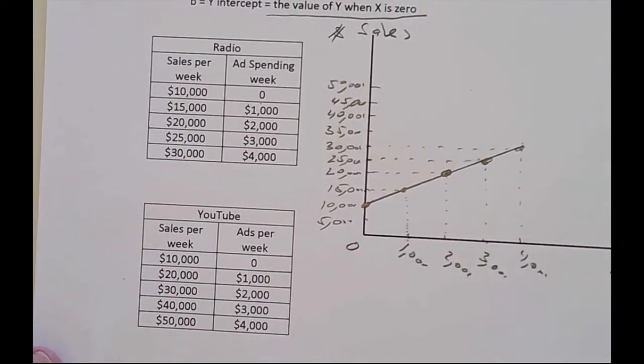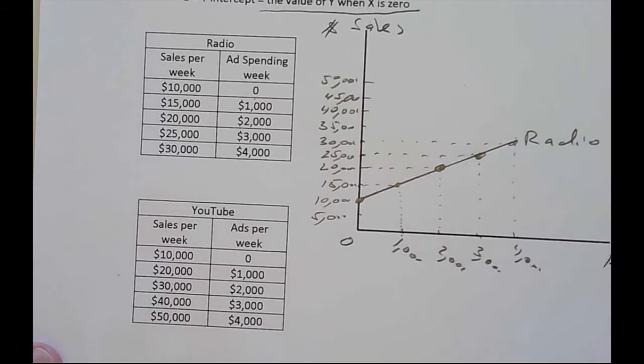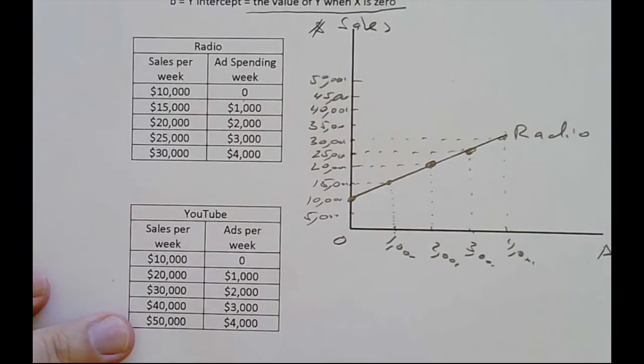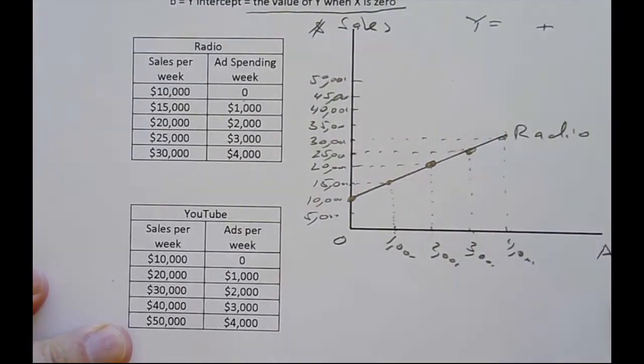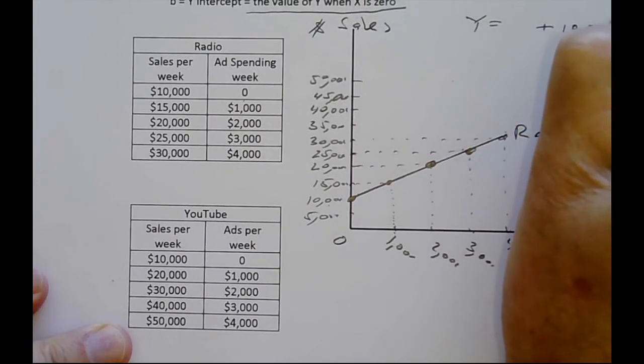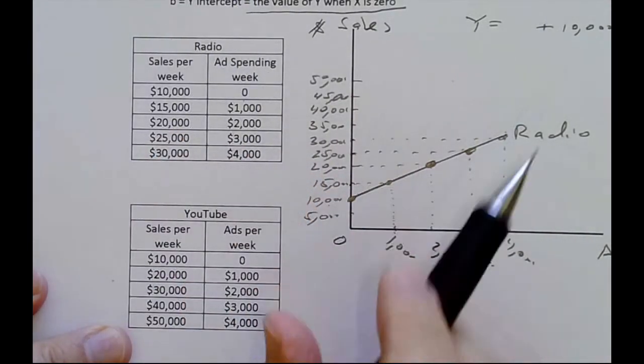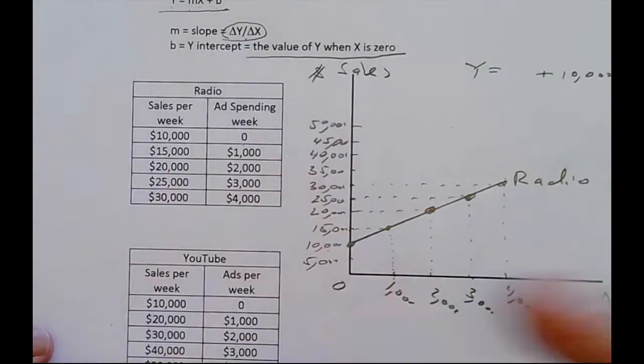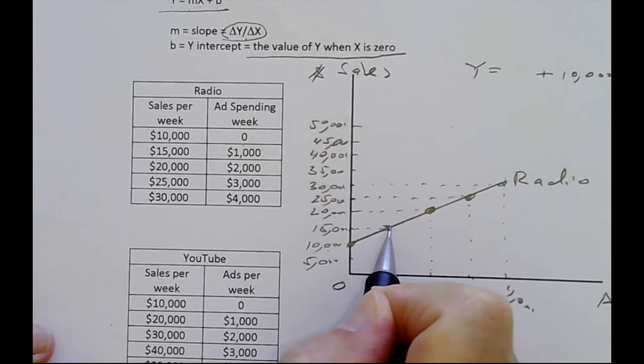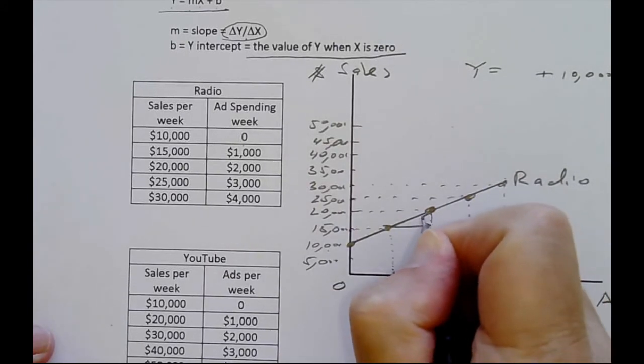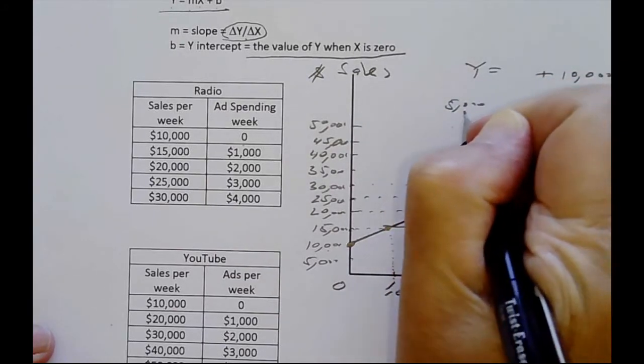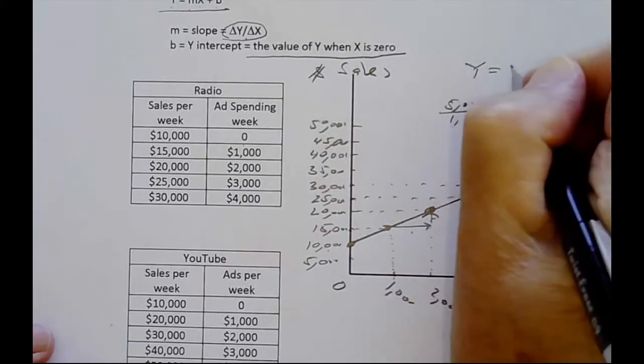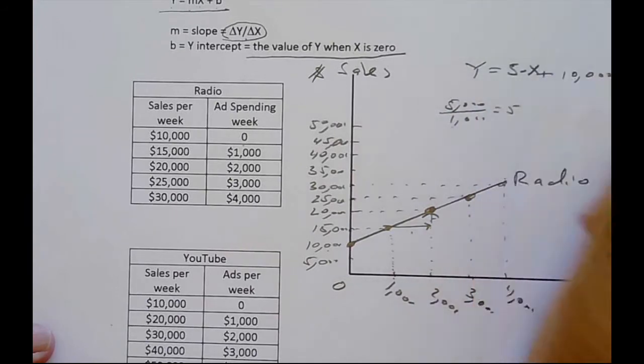If I do a decent job, I should get a nice line out of that. I'll say this is the radio line because it tells us the sales we get from advertising on radio. From this data, we can get an equation for this line: Y equals MX plus B. We have the y intercept right there, it's 10,000. The question is, what is our slope, our M? It's the change in y variable over the change in x variable. If we increase our ad by $1,000, sales go from $15,000 to $20,000. So that would be $5,000 over $1,000, which is five. That's our equation for this line: every time we increase our money on ads by $1,000, we increase sales by $5,000.